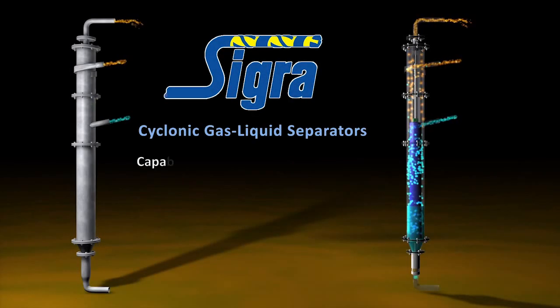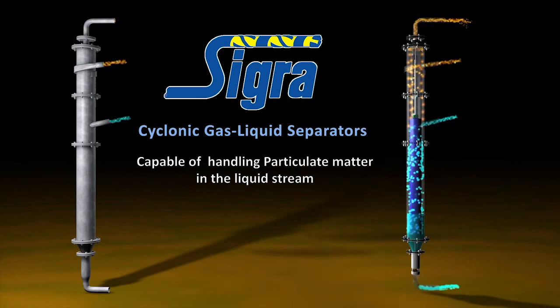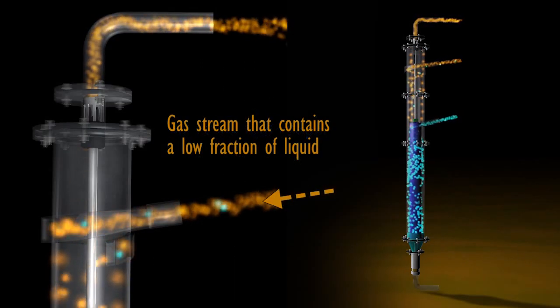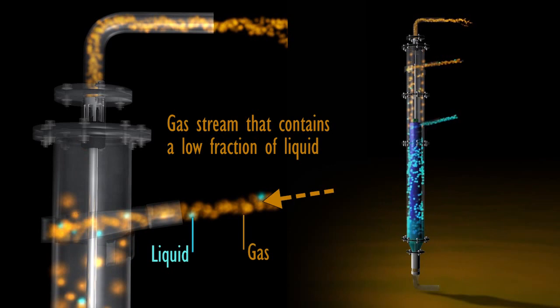Sigra cyclonic gas liquid separators are capable of handling particulate matter in the liquid stream. These are high flow rate, compact, low cost devices that are designed to separate a gas stream that contains a low fraction of liquid.